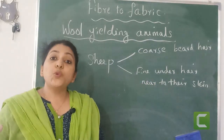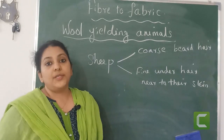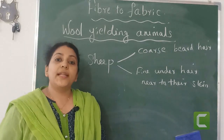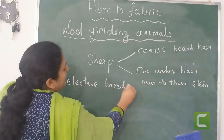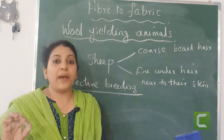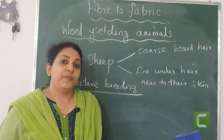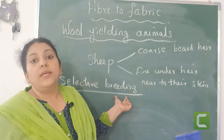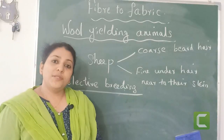For that, we have to choose parents that are having fine under hair. The process of selecting parents to obtain some special characteristics in their offsprings or in their babies is called selective breeding. Selective breeding is the process of selecting parents to get some special characteristics in their babies, such as fine hair. By selective breeding, we can obtain sheep which are having very fine or smooth hair.